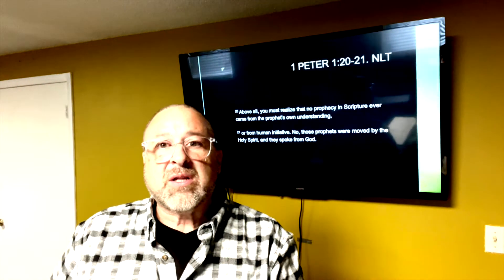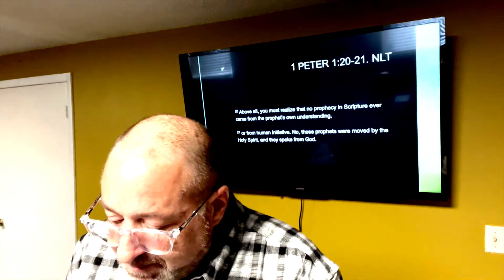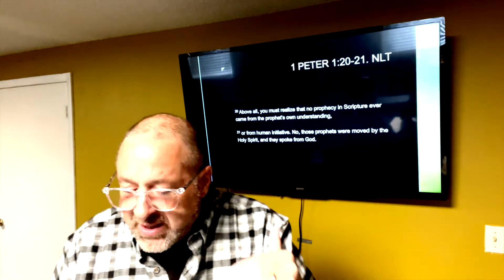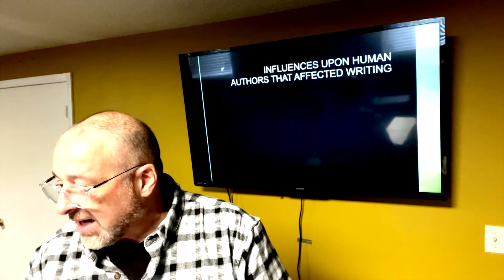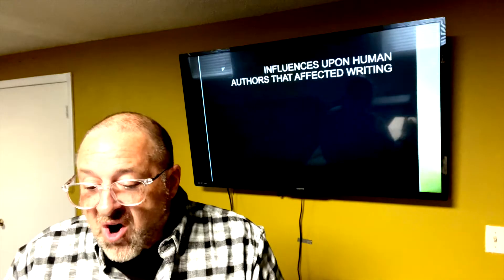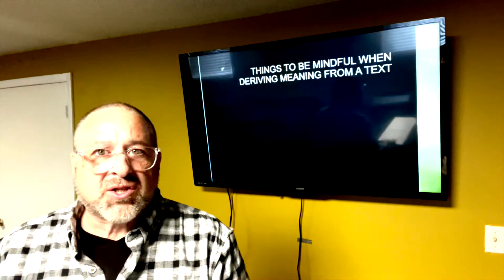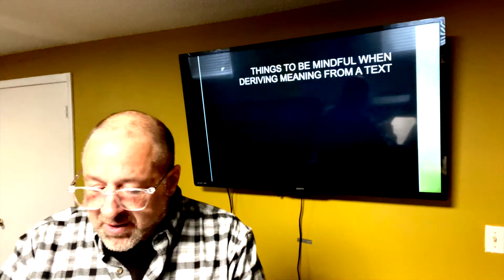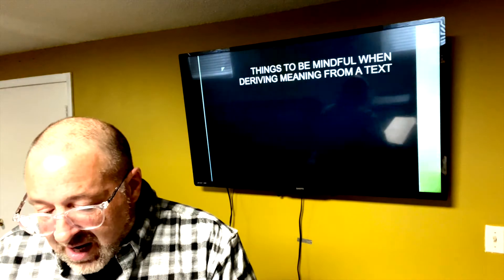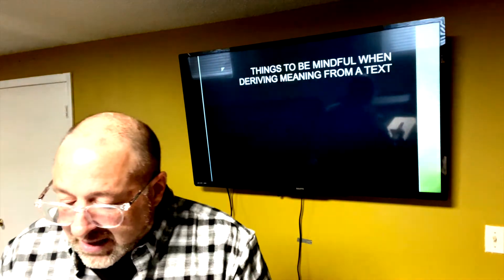Which brings us back to the original authorial intent of what was written. There are three words I want to mention that we need to keep in mind whenever we're trying to derive meaning from a text. Those authors existed in cultural and societal environments, wrote to a specific audience from a specific environment, had a specific intent in their writing, and desired a specific outcome in response. These three words are taken from the book Introduction to Biblical Interpretation by Klein, Blomberg, and Hubbard, specifically from page 46.